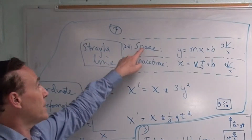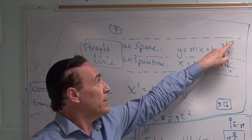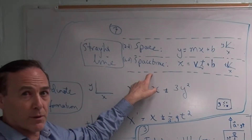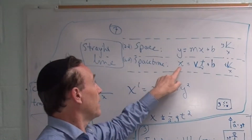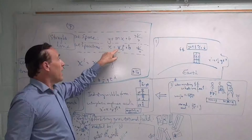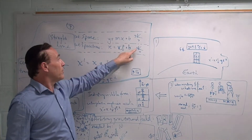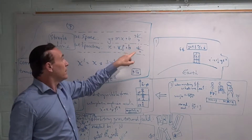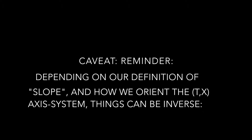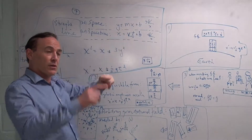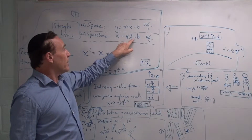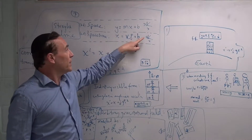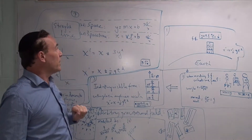A straight line in space: y is equal to mx plus b, the xy-axes. A straight line in spacetime, as we spoke about our initial particle worldline — x is equal to vt, where v would be the speed, and it's the slope of the line in the tx plane. So the inverse of the speed is the slope. x equals vt — the speed times t plus a constant — that's a linear relationship between the two, the equation of a straight line.